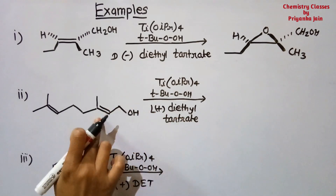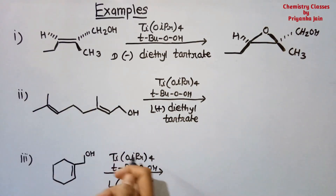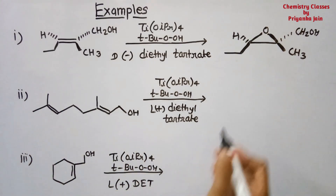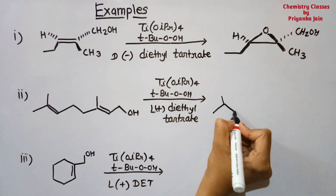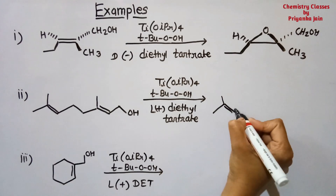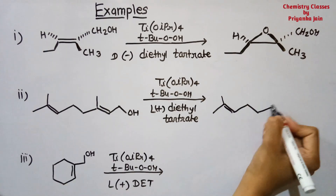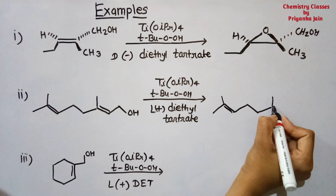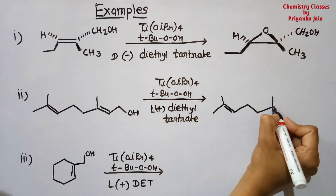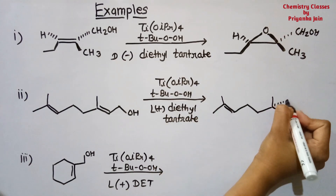With (+) diethyl tartrate, the epoxy ring is formed below the plane. All other parts of the molecule remain as they are — we just form the epoxy ring and check which diethyl tartrate isomer is given. If it is (+), the ring is formed below the plane.